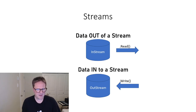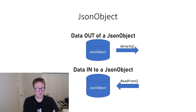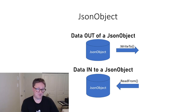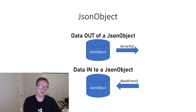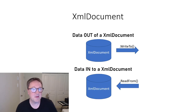Let's carry on to the next one: JSON object. If we have a JSON object, we can get data out by using WriteTo — so WriteTo gets data out of the object. And ReadFrom gets data into the object. So if we have a string with JSON and we want to parse it and put it into a true JSON object variable, then we use ReadFrom.